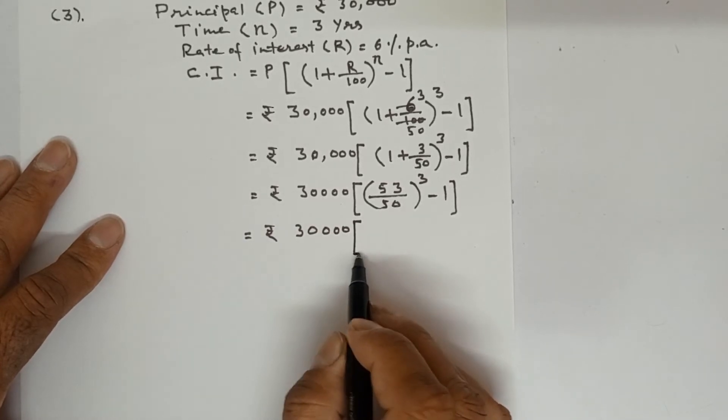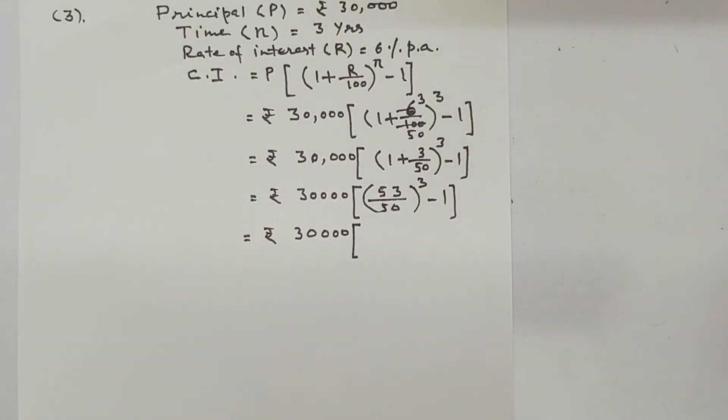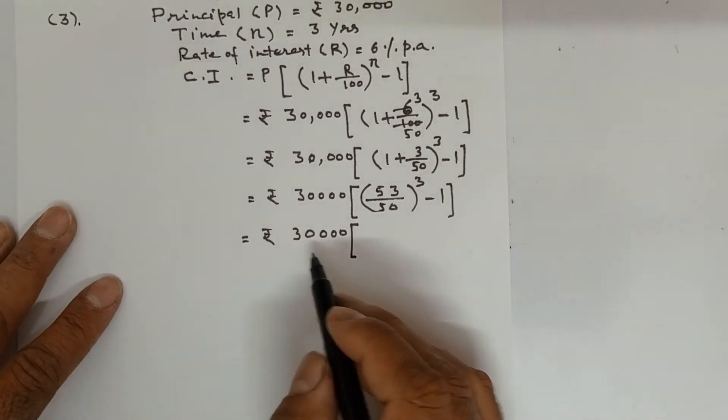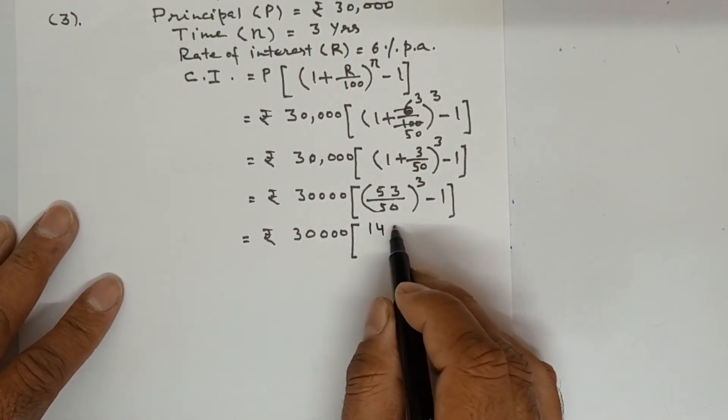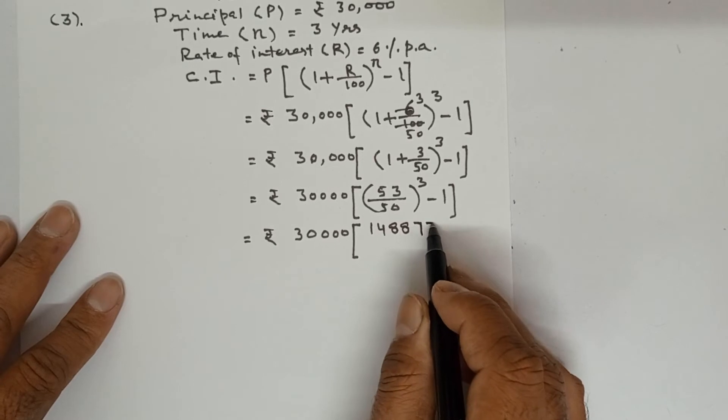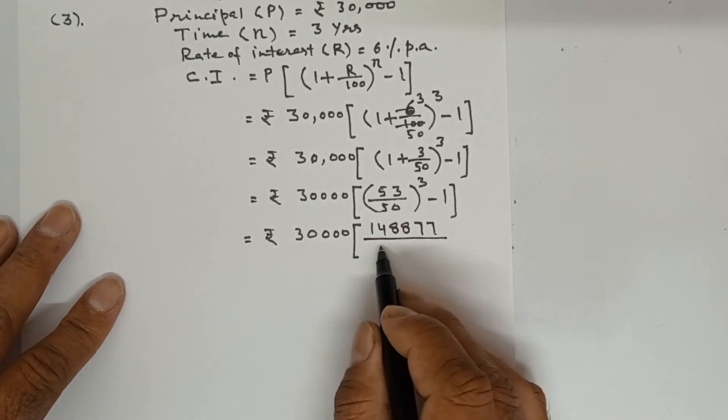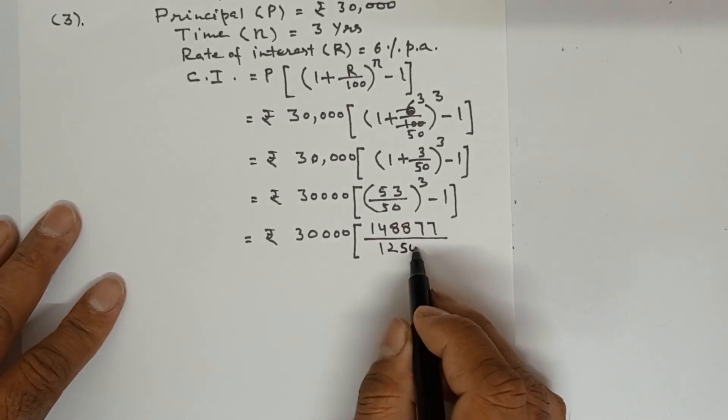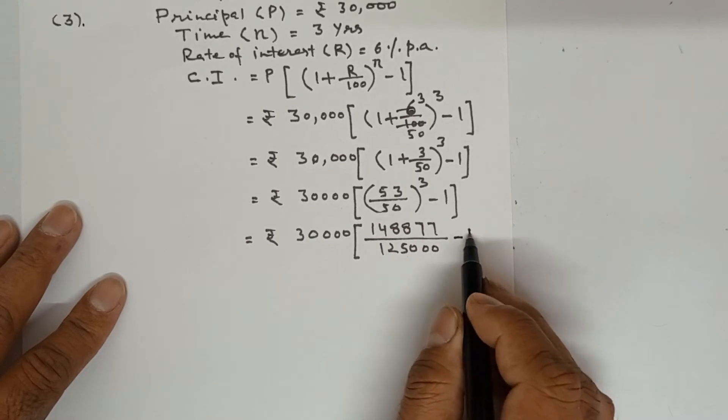Now further Rs. 30,000, 53 is to be multiplied 3 times. So in the rough work, you can multiply 53 three times. It is 148,877. 50 into 50 into 50 is 125,000, minus 1.